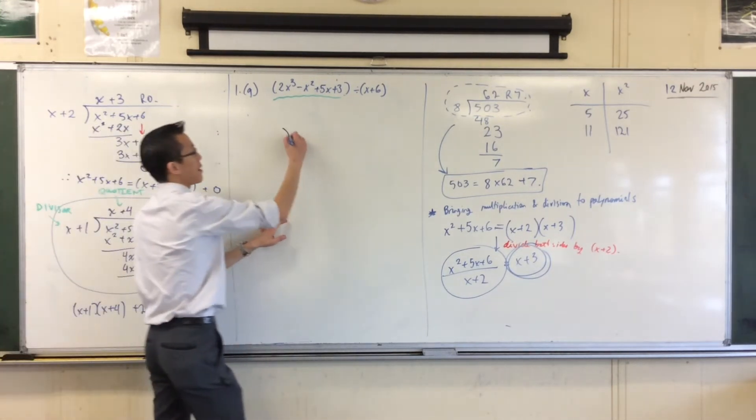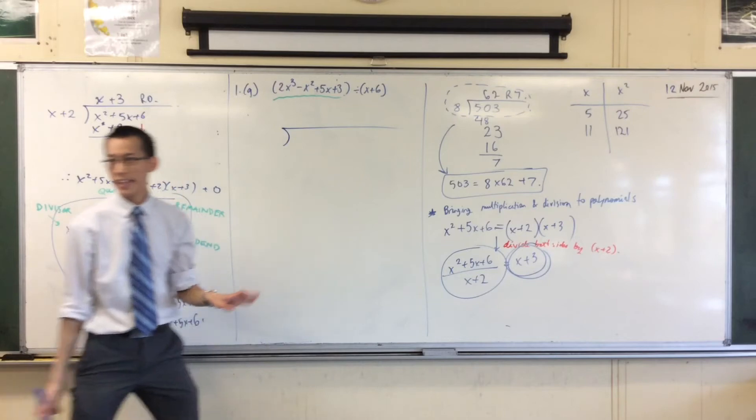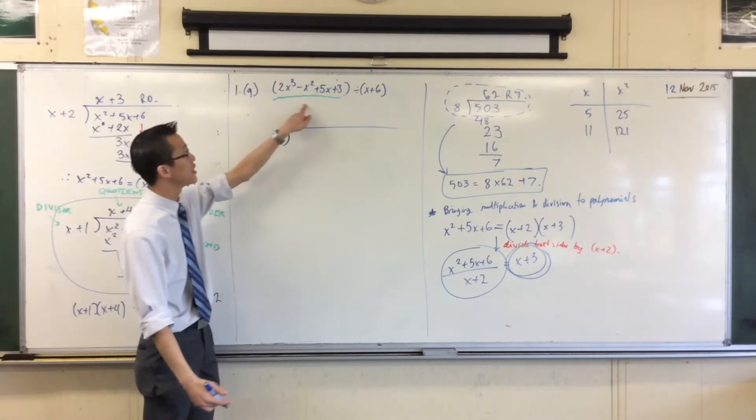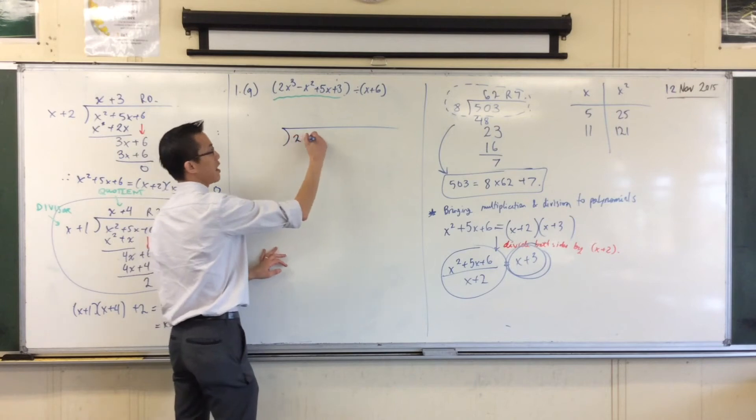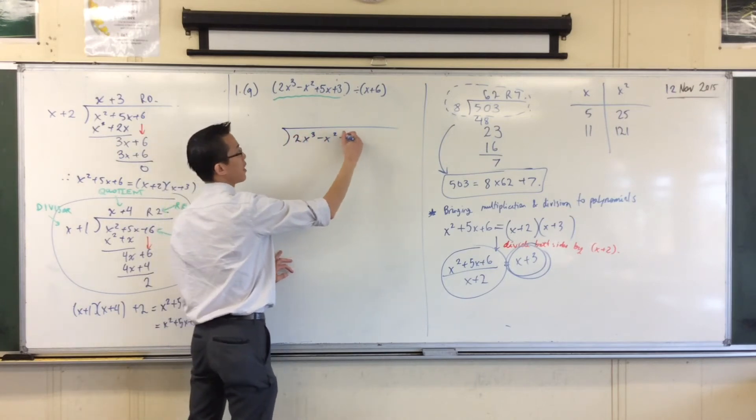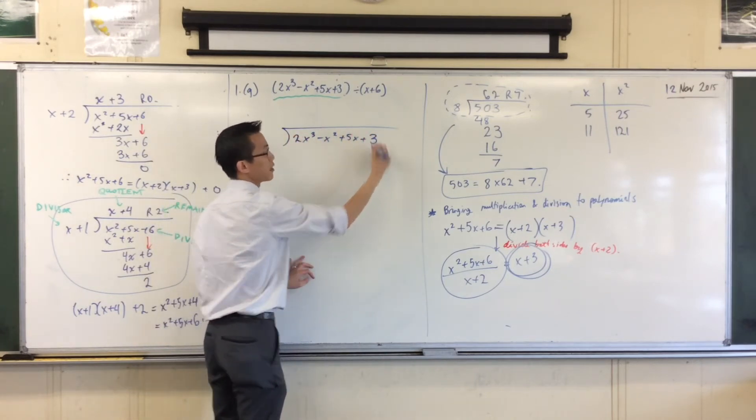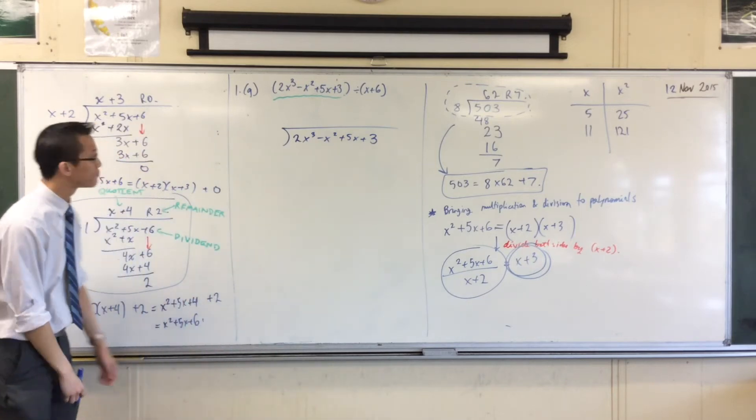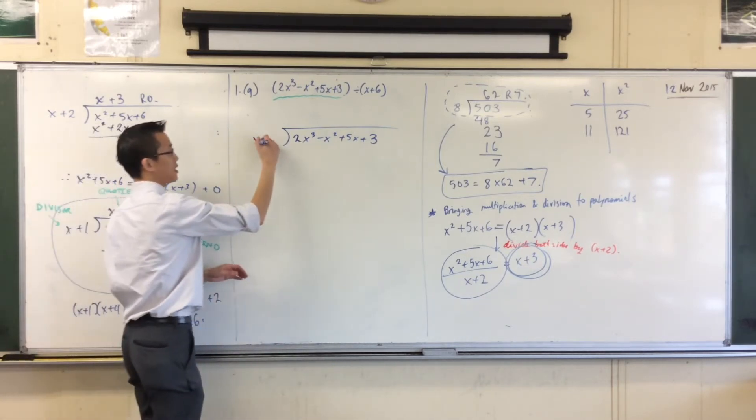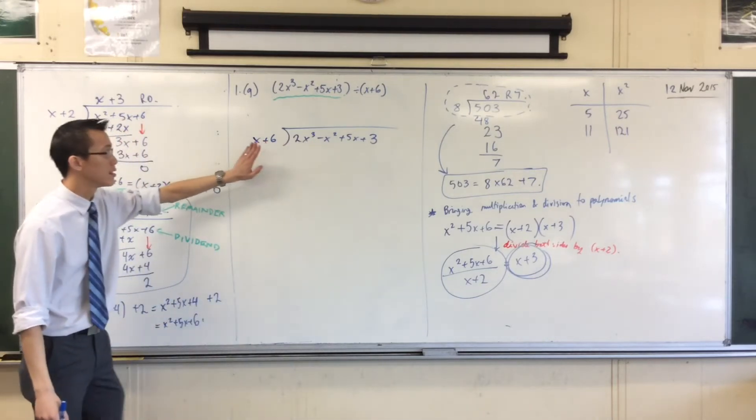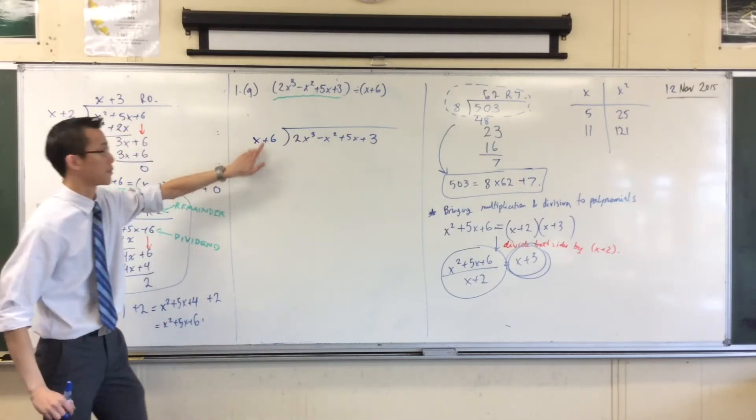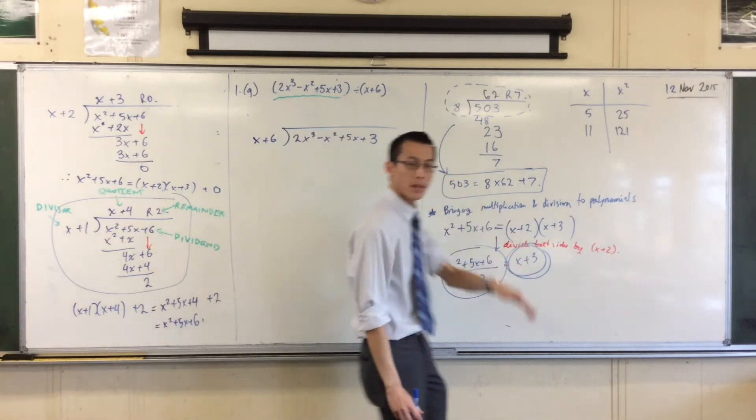The first thing I'm going to do, is I'm going to write my big division symbol. It's going to be pretty big, because I've got to fit all of these terms underneath it. So, I'm going to go, 2x cubed, minus x squared, plus 5x, plus 3. Is that alright? I've got an x plus 6 here, that's my divisor. Dividend, divisor, now I'm ready to start. I'm going to work out the quotient, and the remainder.